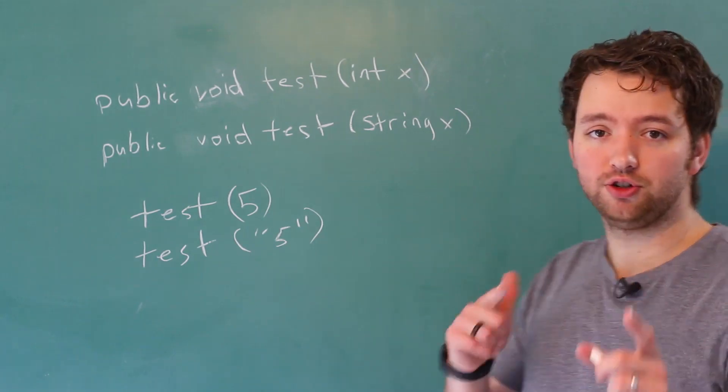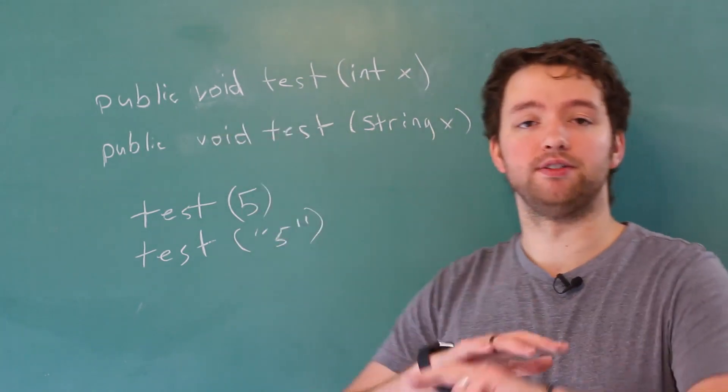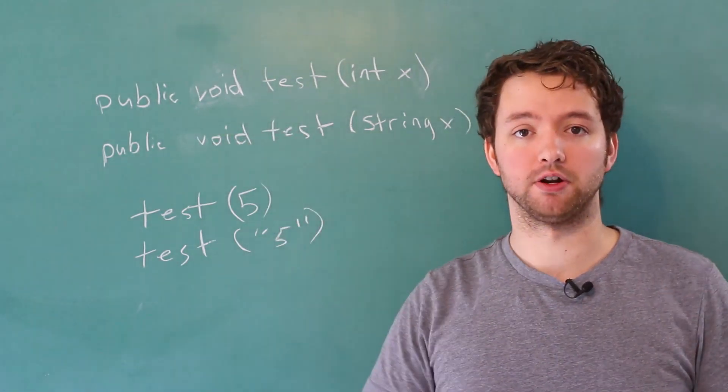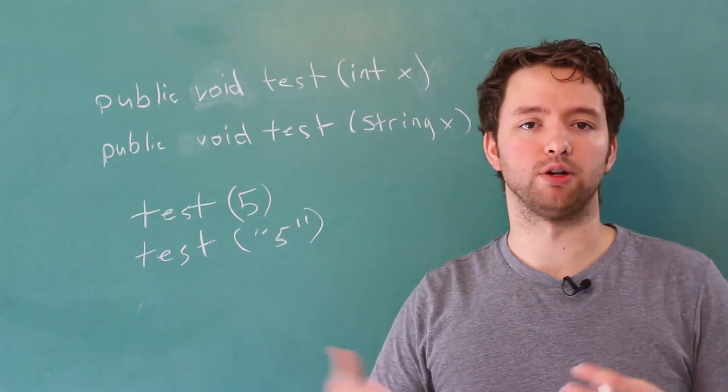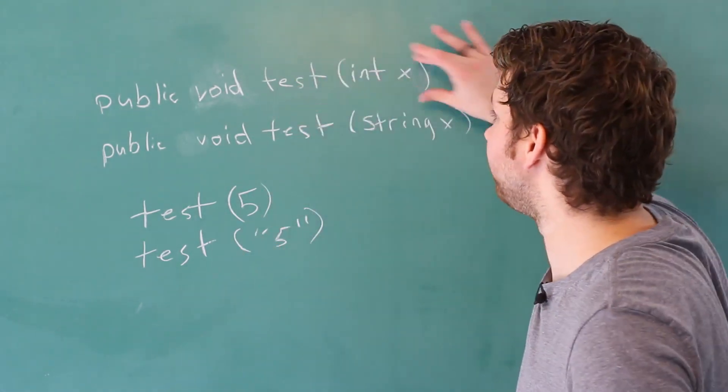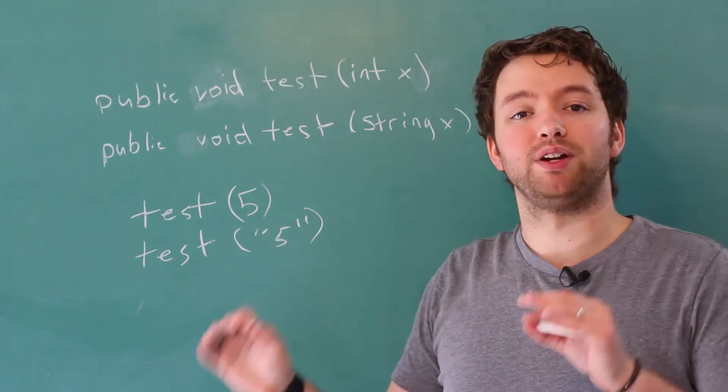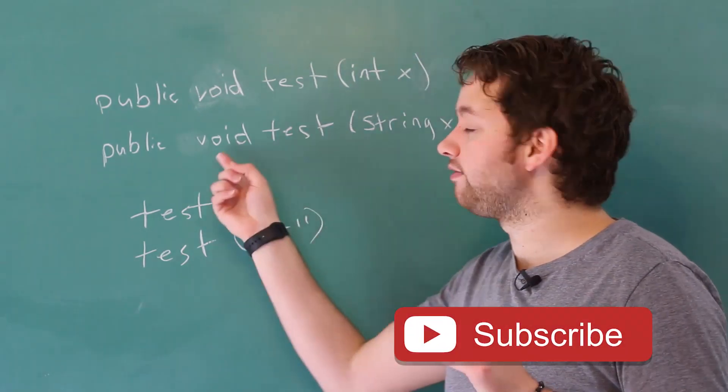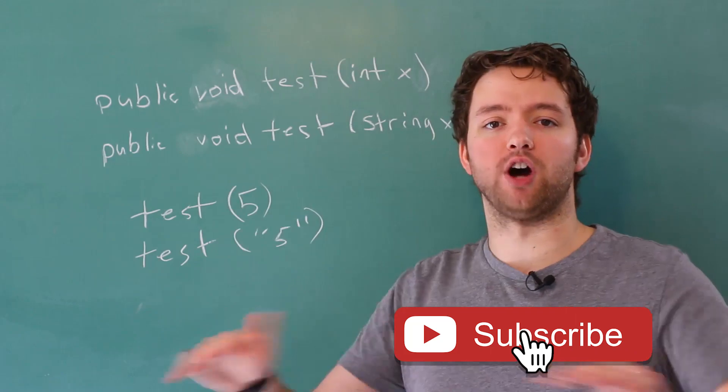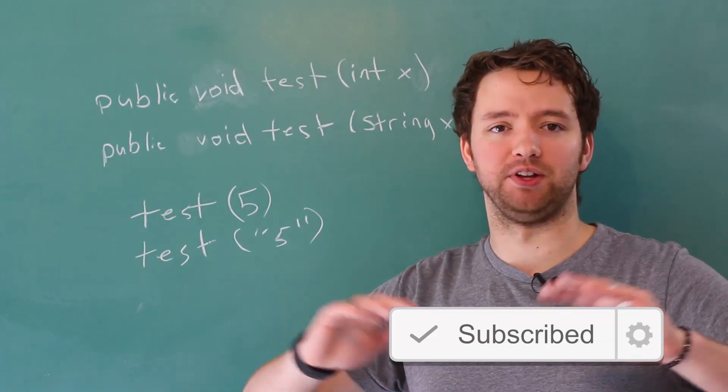Anyways, one thing you should know is that the return type does not contribute to the method signature, and the method signature basically determines if the method is unique. These two methods have different signatures, but when it comes to overloading, having a different return type does not change the signature, at least enough.